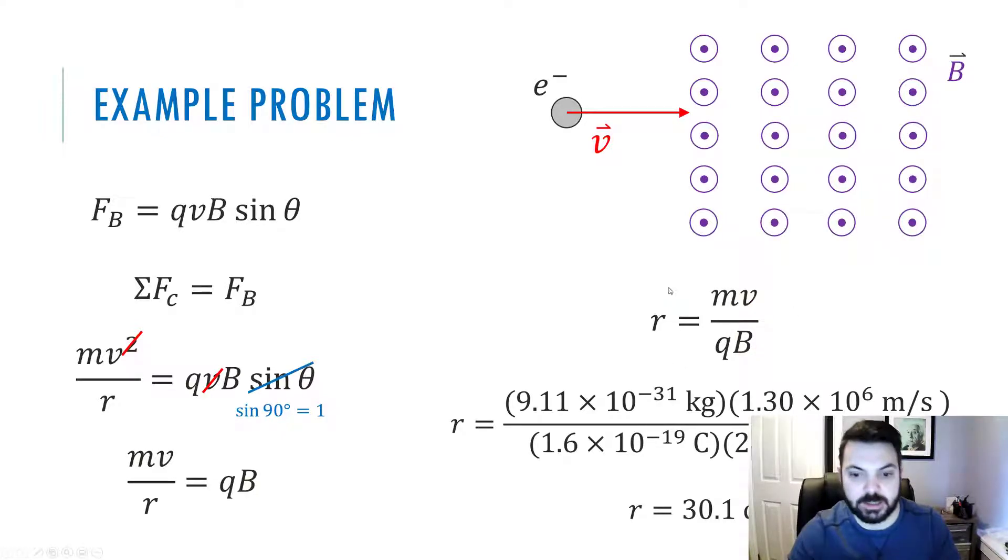And plug and chug. All right, be careful with units. Mass and charge of an electron, of course, come from the front of your data booklet. It is an electron, so we're going to use those numbers. We definitely want to use kilograms and meters per second and base units, regular Tesla, not micro Tesla, so we're going to put the 10 to the minus 6 there for micro Tesla. And I think we were given the speed. And there's the radius, 30 centimeters.